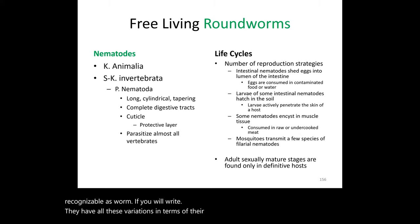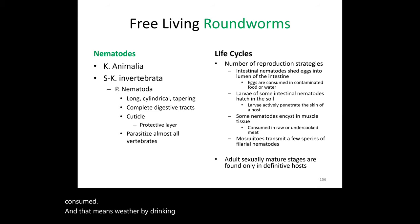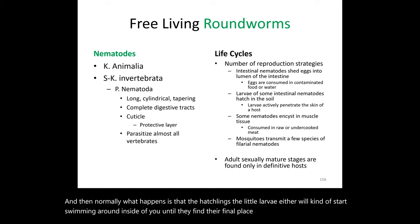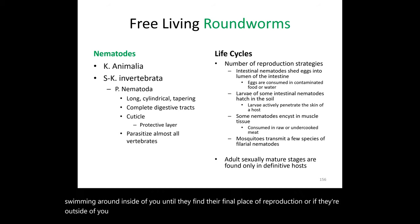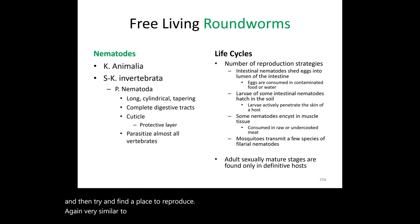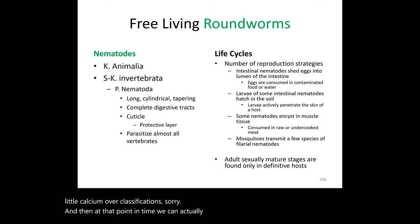There are some very common life cycle features you should be familiar with: their eggs generally have to be consumed, whether by drinking or eating. Once inside, the hatching larvae will either swim around until they find their final place of reproduction, or if outside, they seek pieces of skin or a wound to enter you and find a place to reproduce. Similar to flatworms, these can also form calcifications, causing tissue damage.